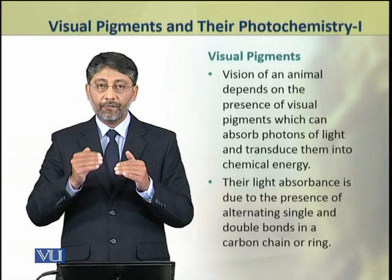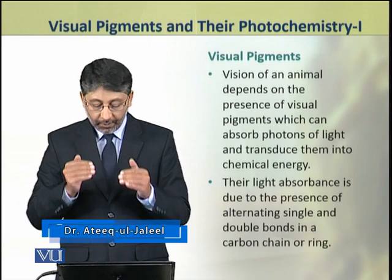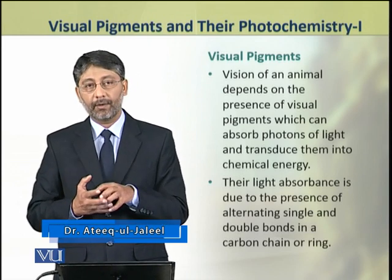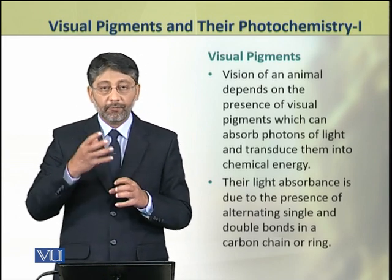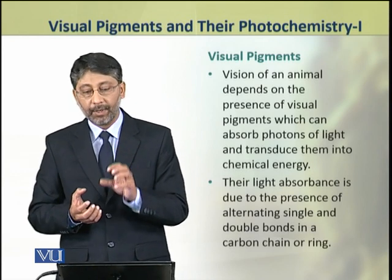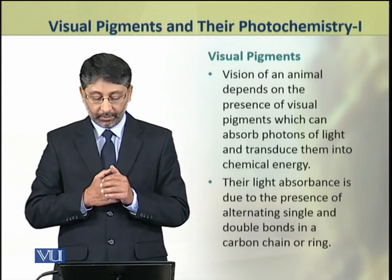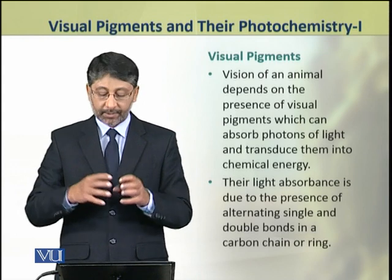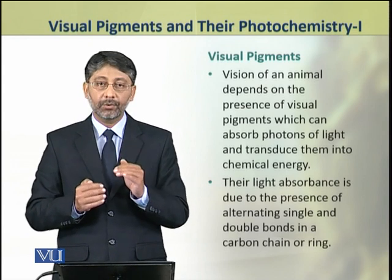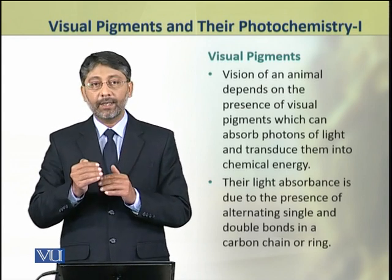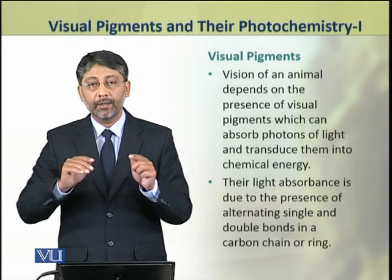The vision of an animal depends on the presence of visual pigments. These pigments can absorb light and transduce the photons of light into chemical energy and electrical signals. The light absorbance capacity of these visual pigments is due to the presence of alternating single and double bonds in a carbon chain or a carbon ring.